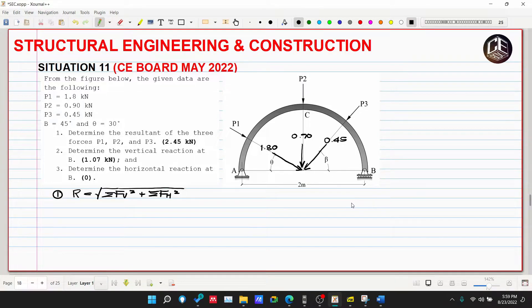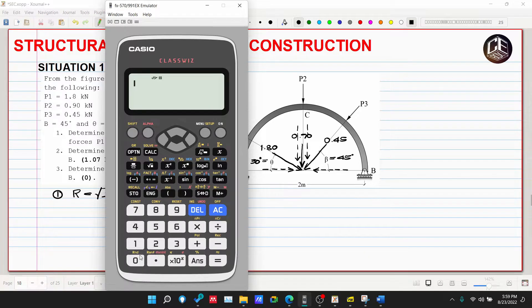Ang ating theta is 30 degrees, ating beta is equivalent to 45 degrees. Ngayon ito yung vertical component ng 1.8, horizontal component ng 1.8. Ito naman yung vertical component ng 0.45 and horizontal component ng 0.45. Solve natin, mas madali doon sa 0.45 kasi naka 45 degrees, so equal ang vertical and horizontal component ng 0.318.